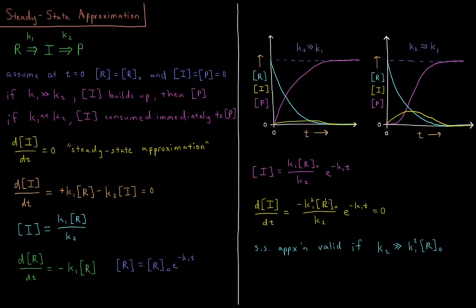At finite times, making this expression zero requires either R0 equals zero — trivial, no reaction — or K1 equals zero. So the steady state approximation is valid if K2 is much much greater than K1 squared times the concentration of R0. This corresponds to the situation where any intermediate produced is basically instantly consumed to P. In a diagram, if K2 is much much greater than K1, as the reactant decreases we get very little intermediate, giving a flat curve near zero — the steady state approximation holds.